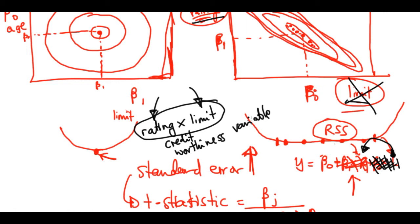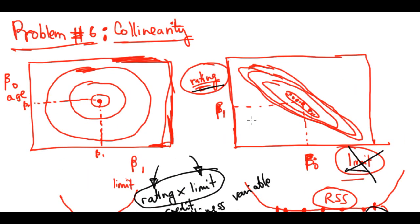A second solution is to combine the collinear variables into one — for instance, multiplying credit rating by credit limit to create a new variable called 'credit worthiness.' You can combine or drop them. This is more of an art than a science, and you play around with different methods to find what gives the best results. That covers the six regression problems, and in the next video we will recap linear regression before moving into a lab on predictive modeling.